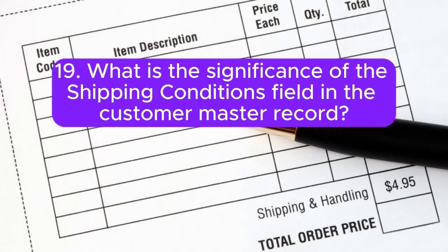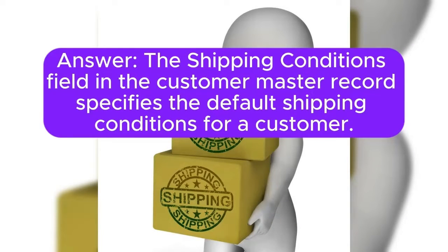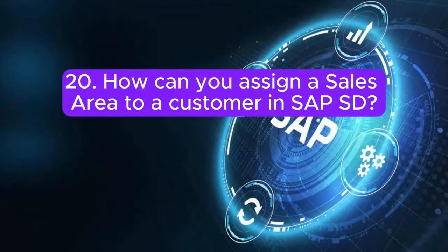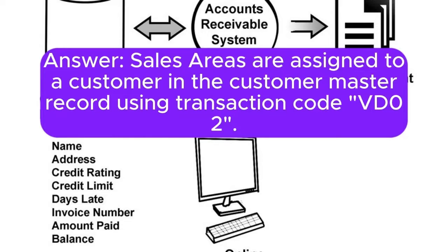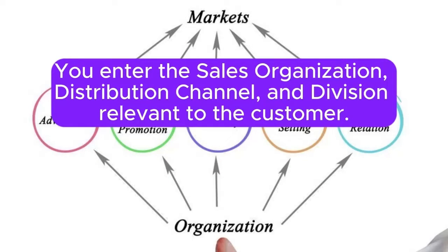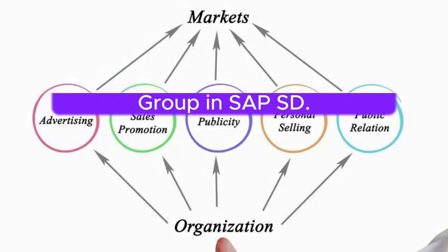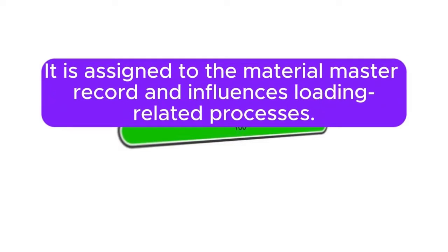Question 19: What is the significance of the shipping conditions field in the customer master record? Answer: The shipping conditions field in the customer master record specifies the default shipping conditions for a customer. It is automatically transferred to the sales document. Question 20: How can you assign a sales area to a customer in SAP SD? Answer: Sales areas are assigned to a customer in the customer master record using transaction code BDO2. You enter the sales organization, distribution channel, and division relevant to the customer. Question 21: Explain the role of the loading group in SAP SD. Answer: The loading group is used to group materials based on loading characteristics. It is assigned to the material master record and influences loading-related processes.